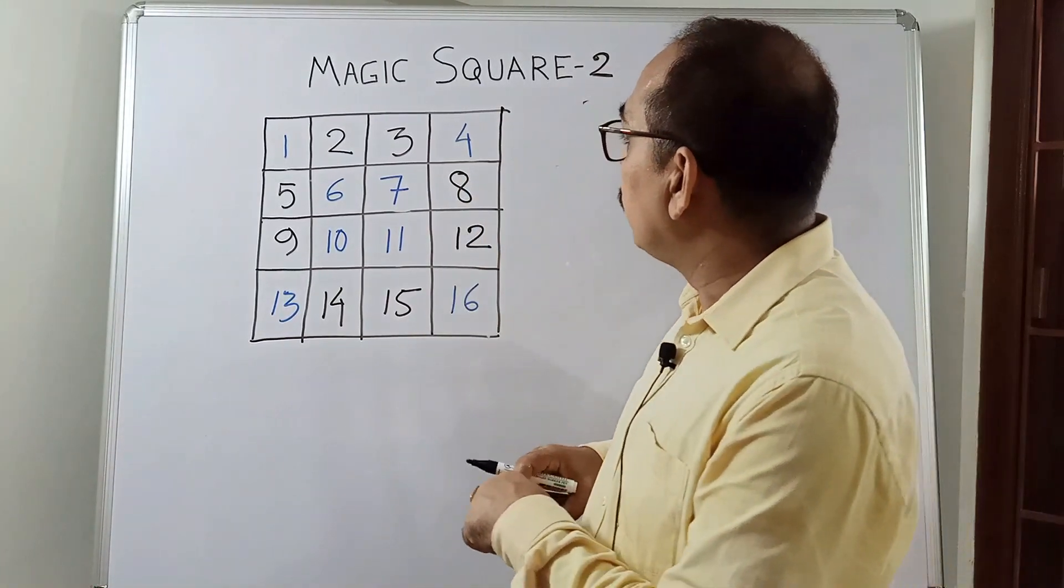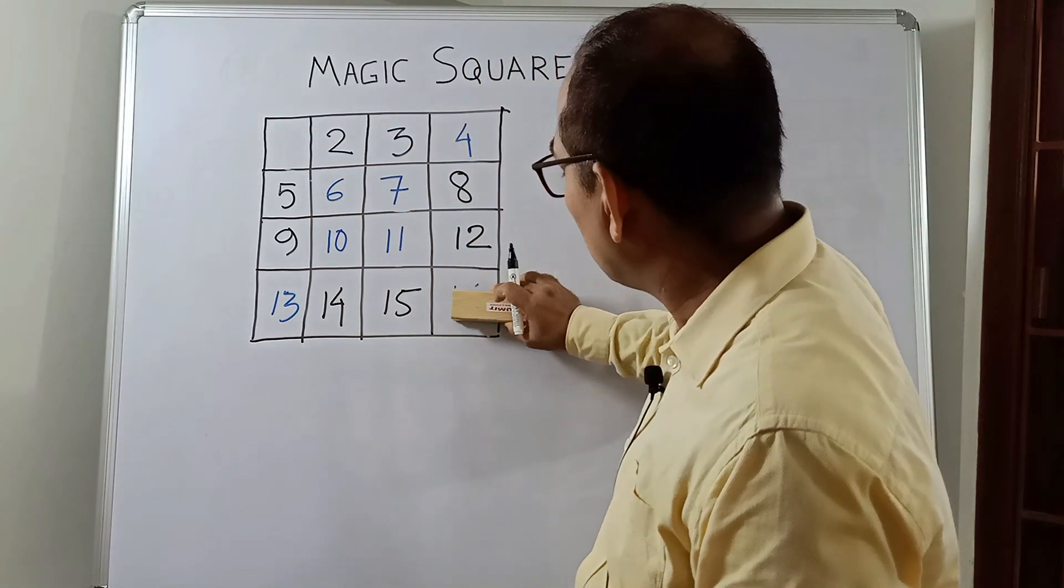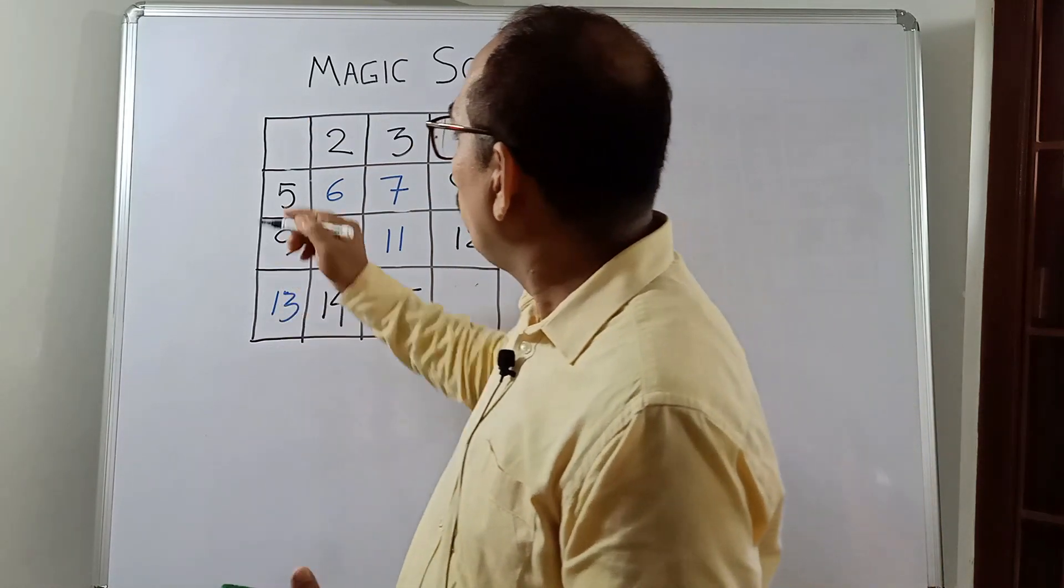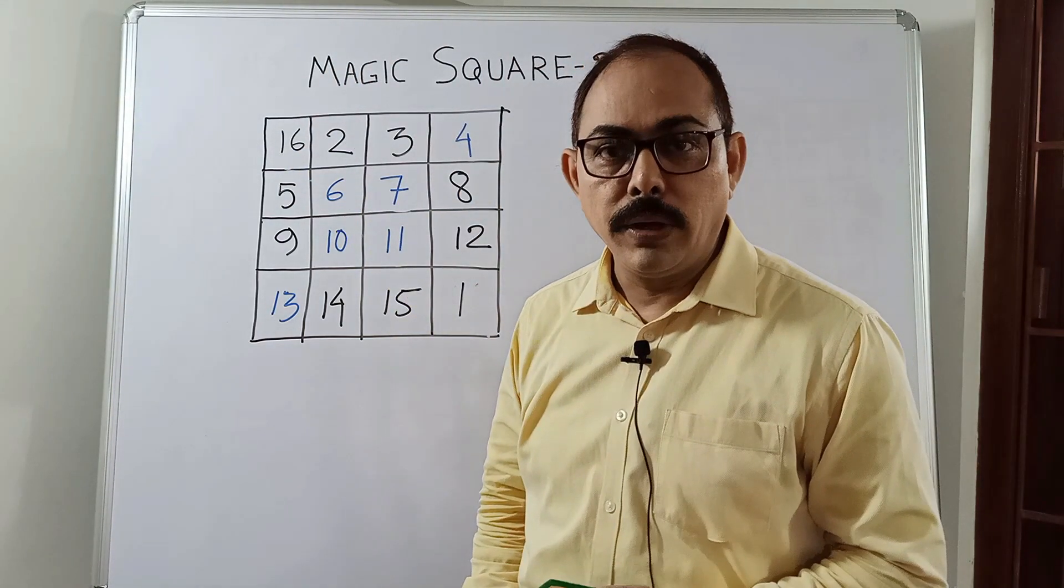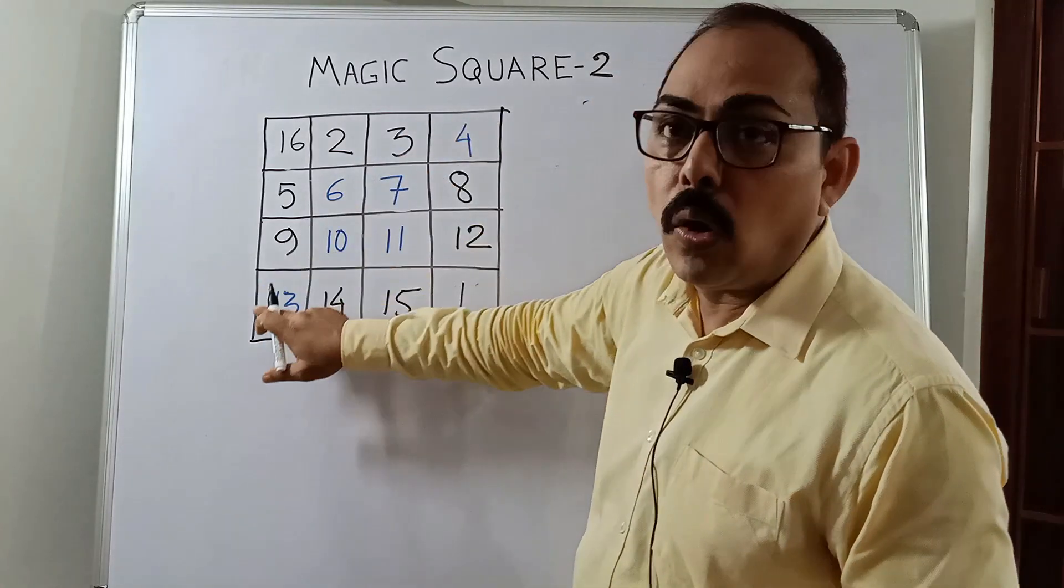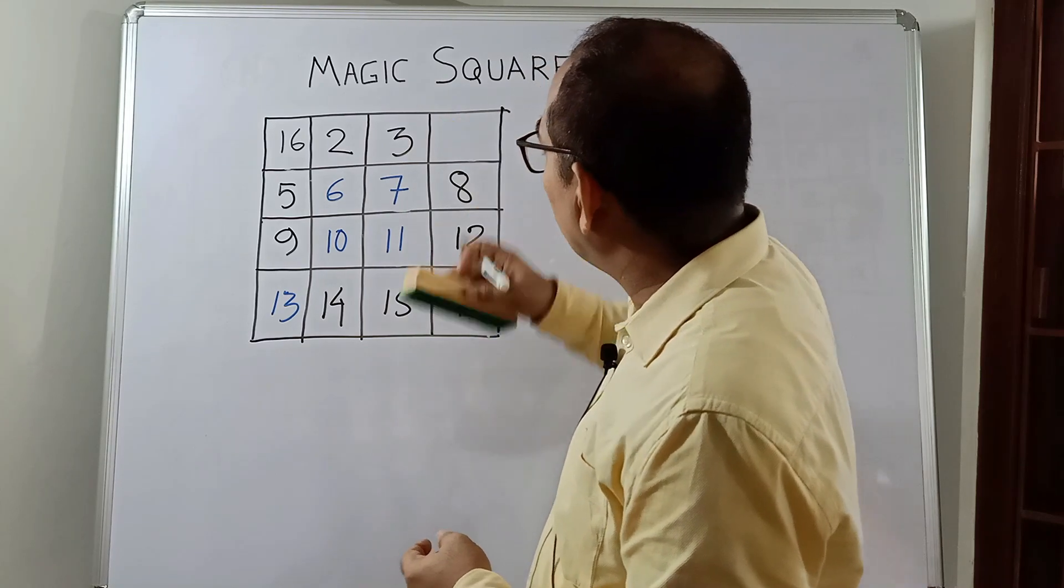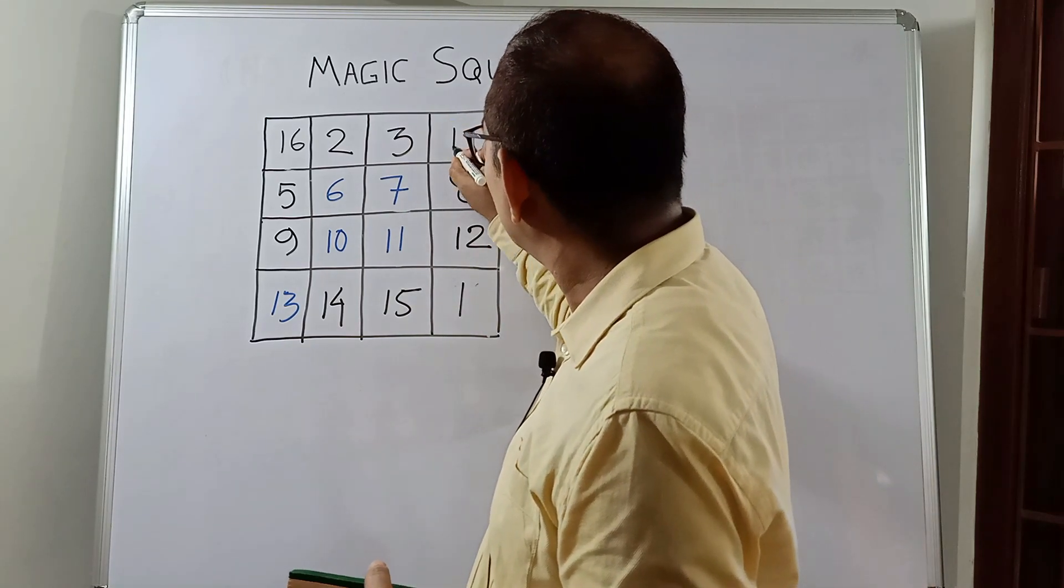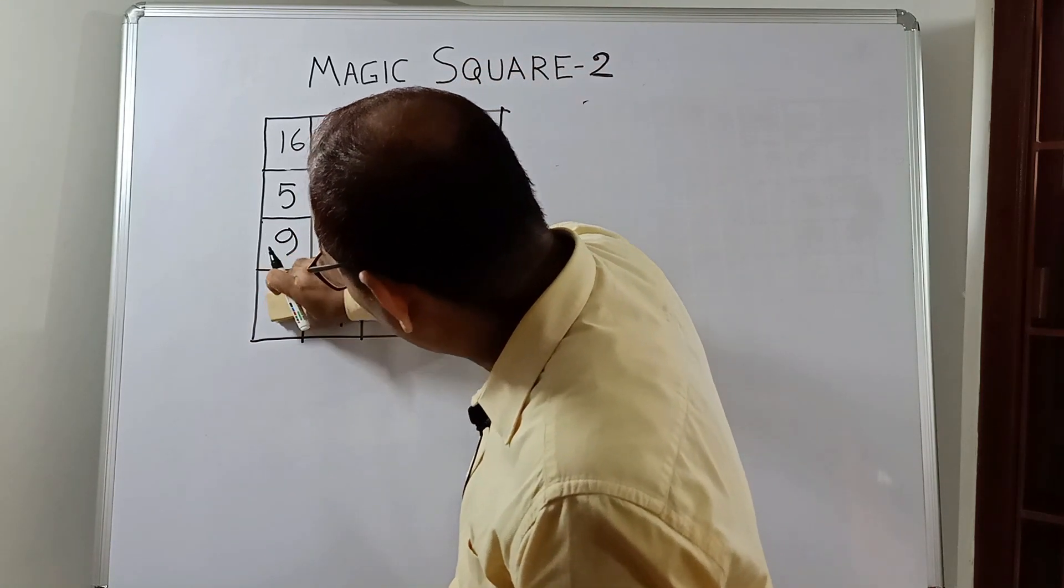But blue color numbers will be interchanging. Say, 1 and 16 will interchange. 16 will come here and 1 will come here. The same thing we will do with these two corner numbers also. We will write 13 here and 4 here.